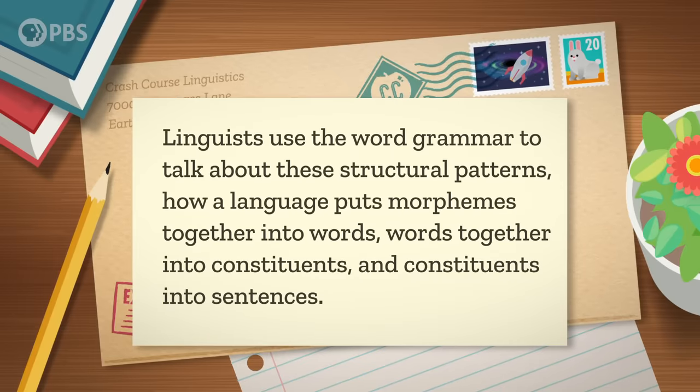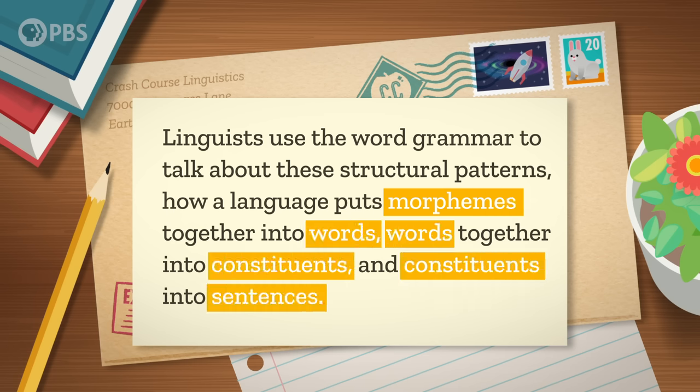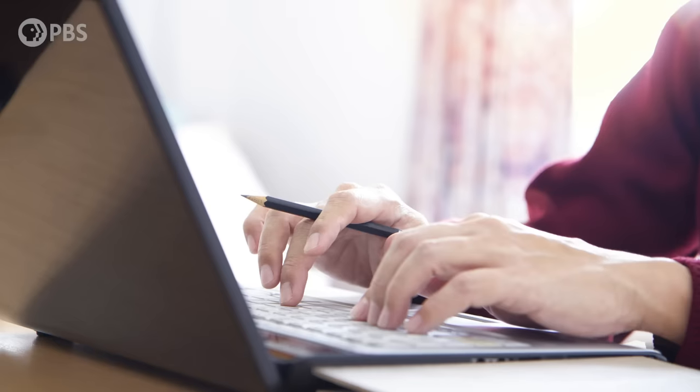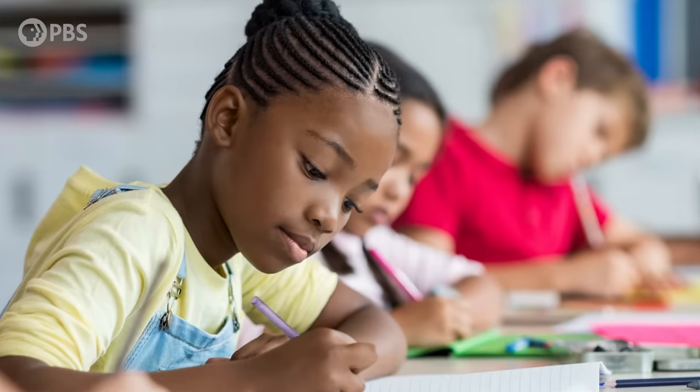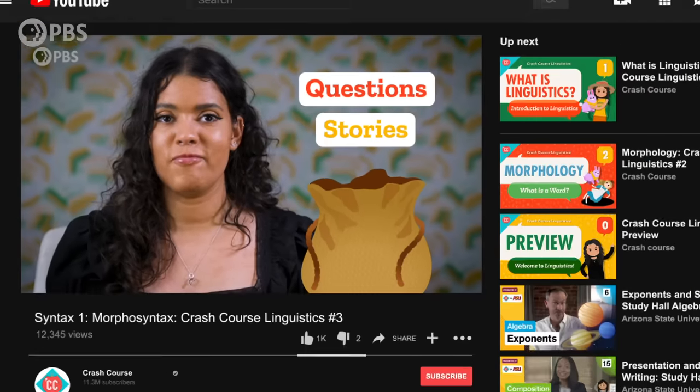Linguists use the word grammar to talk about these structural patterns — how a language puts morphemes together into words, words together into constituents, and constituents into sentences. This combination of morphology and syntax is also called morphosyntax. In European history, grammar often meant learning the specific patterns of how Latin works, which involved trying to awkwardly shoehorn English into being more like Latin, or trying to undo perfectly natural language changes. So even now, grammar sometimes has a bad reputation of smug people telling you you're wrong about how you use language. But in fact, we're all doing grammar all the time, and we're really good at feeling whether something is grammatical intuitively. Grammar is what takes us from 'rabbit' to 'is this the same rabbit I saw yesterday?' — the thing that lets us transform a grab bag of words and morphemes into questions and stories and videos like this.